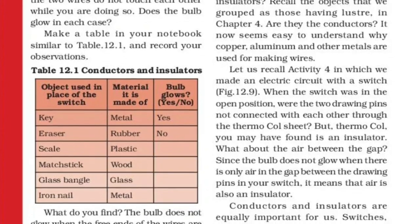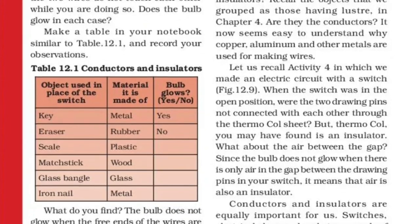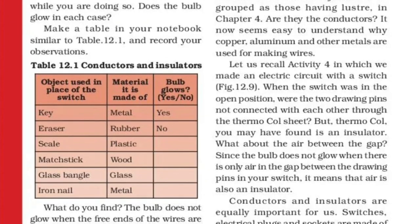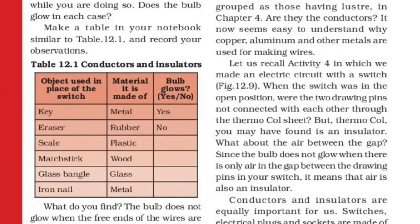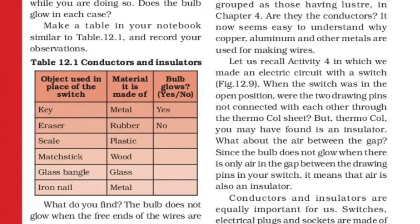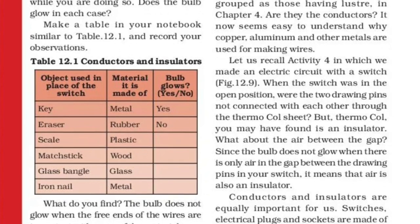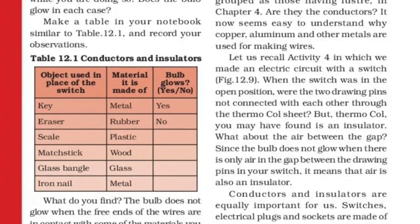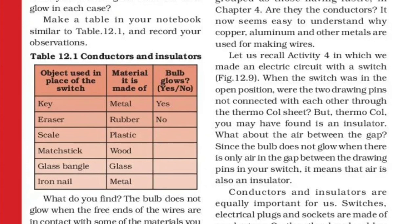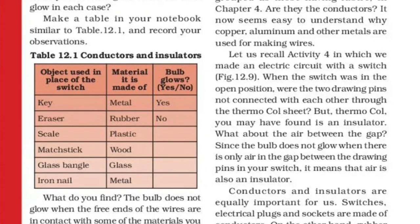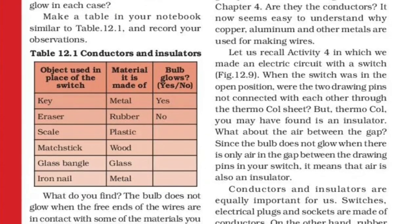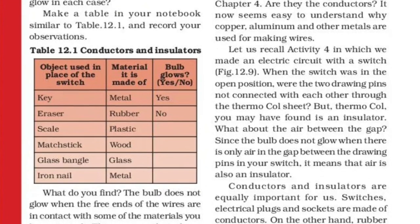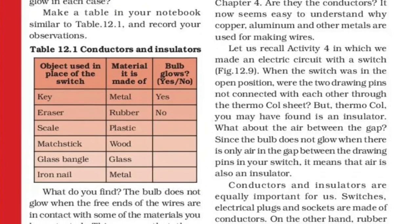Conductors are the materials that allow electricity to flow through them easily. If electricity passes through the two ends of the samples, we identify them as conductors. Insulators are the materials that do not allow electricity to pass through them.